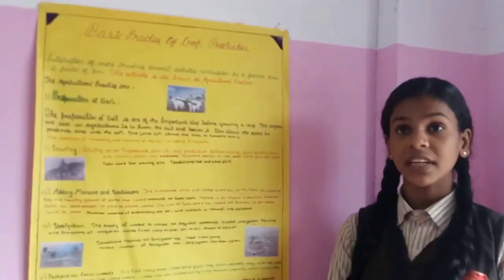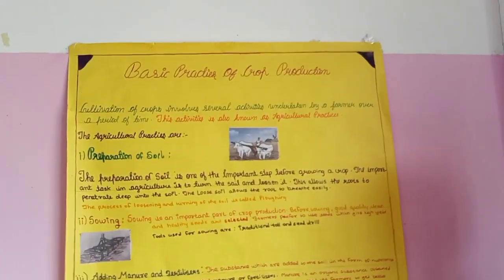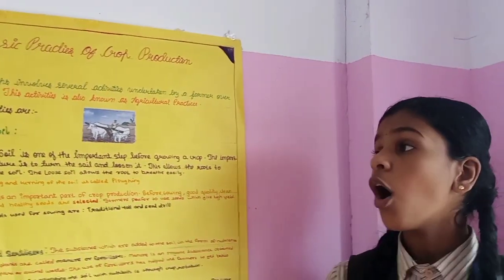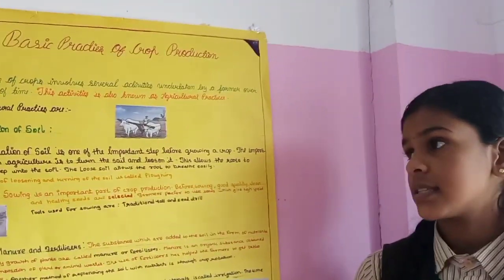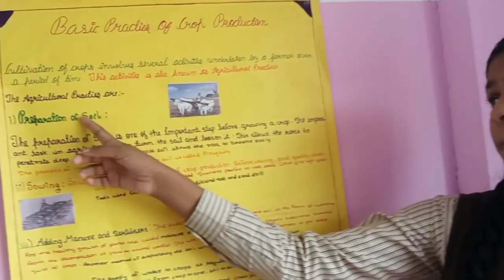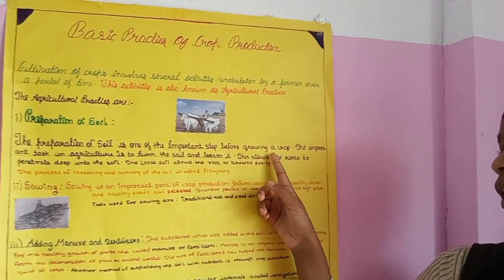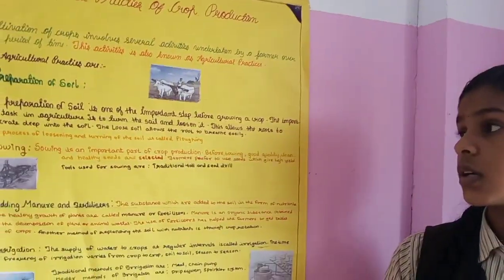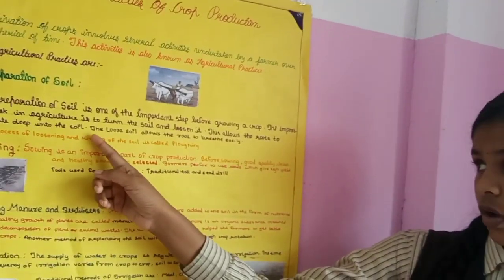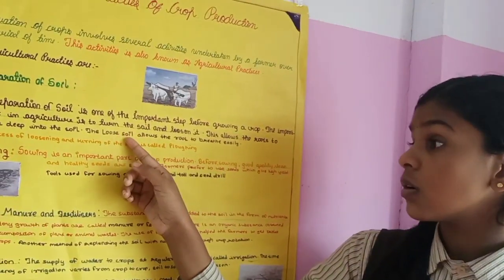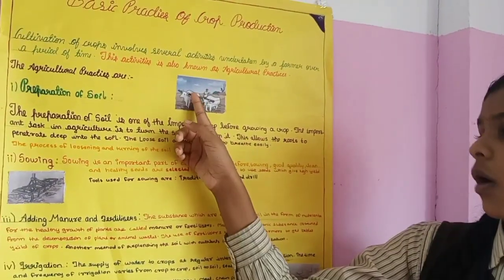Hi everyone. I am going to explain the basic practices of crop production. Cultivation of crops involves several activities undertaken by a farmer over a period of time, also known as agricultural practices. The first one is preparation of soil. Preparation of soil is one of the important steps before growing a crop. The important task is to turn the soil and loosen it, which allows the roots to penetrate deep into the soil and breathe easily. The process of loosening and turning the soil is called tilling or ploughing.